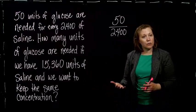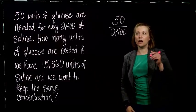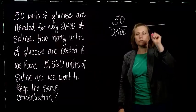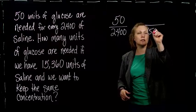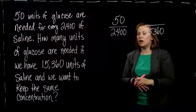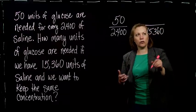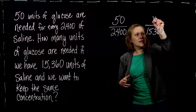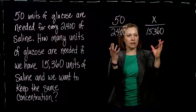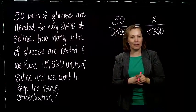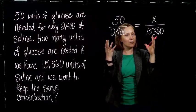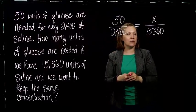So what we do is set up another ratio. We know we've got 15,360 units of saline, but we don't know the glucose. So I'm going to make that X. And we want these things to be in proportion to each other. So if we put an equal sign between them, we have created a proportion and that's an equation we can solve.